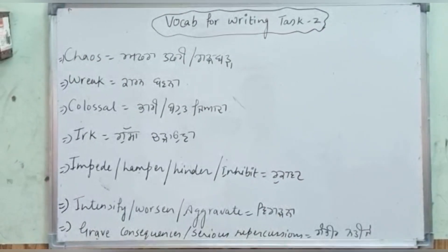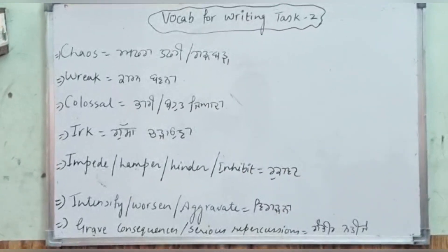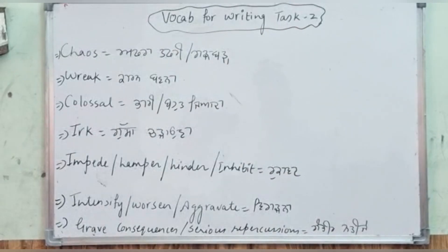These are some of the vocabulary words which can be used in Writing Task 2 to increase your band scores. Notice these words you can see in the reading module also, as I have mentioned some of the words along with the meanings in Punjabi. First, the word is chaos.